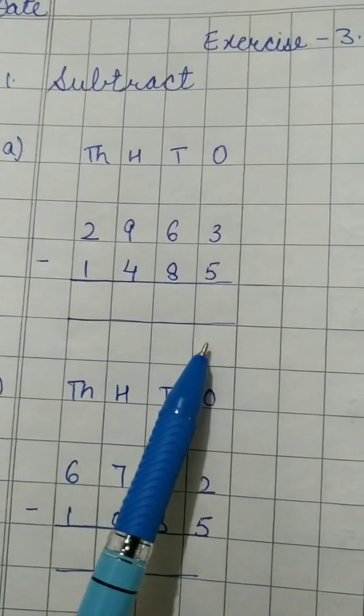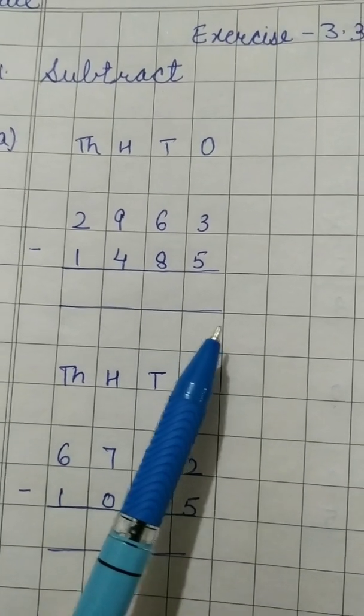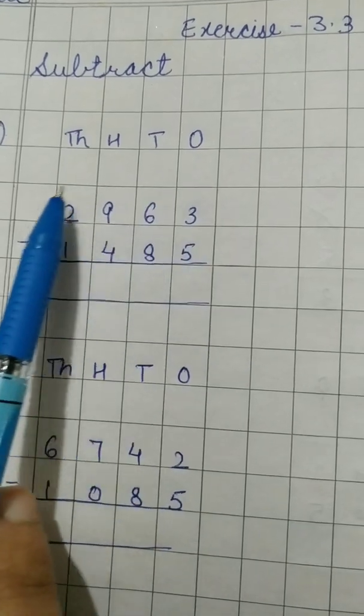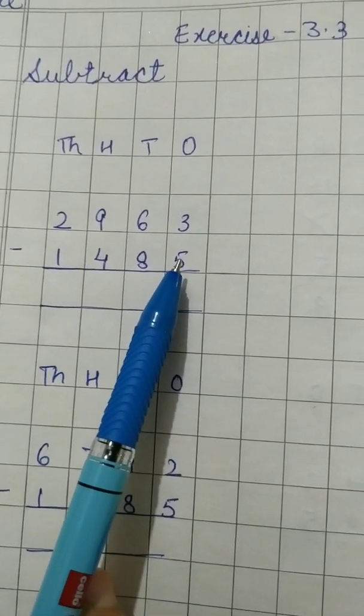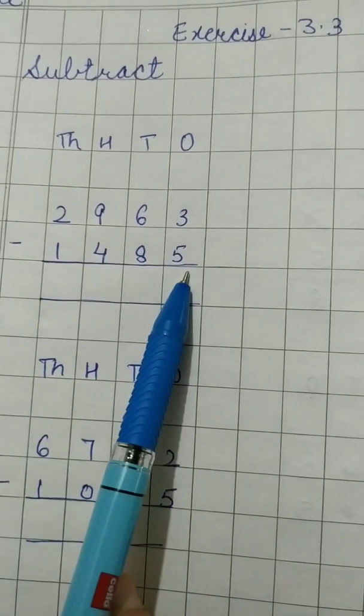Here we are going to do the sums which are related to borrow. Now these two numbers which are given are already arranged. Here the bigger number is written up and the smaller number is written down.